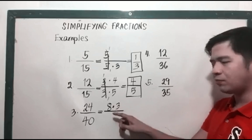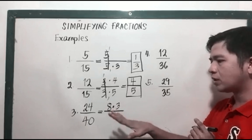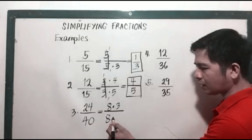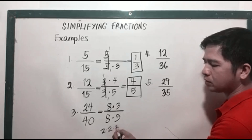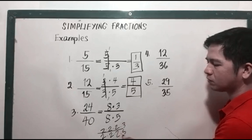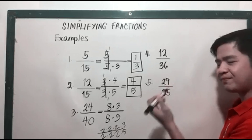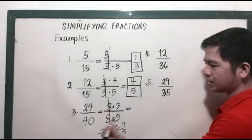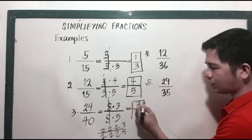8 is not a prime number, but you can use 8 as long as there's a matching factor of 8 in the denominator. 40 is 8 times 5. You could also write it as 2 times 2 times 2 in both numerator and denominator, but that makes the solution longer. So using 8 times 3 over 8 times 5, we cancel the 8s, and the remaining factors are 3 and 5, giving us 3 over 5.